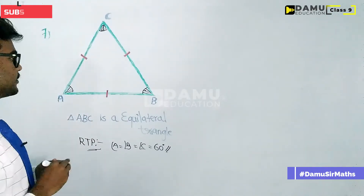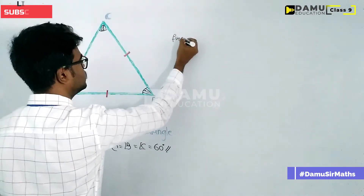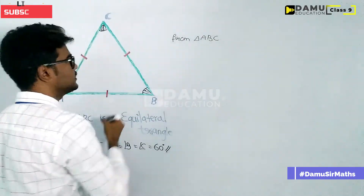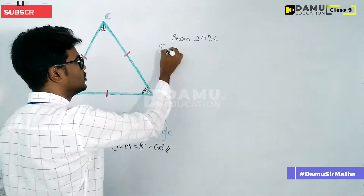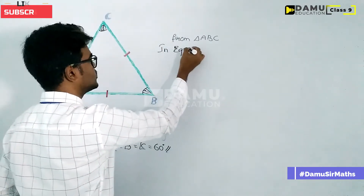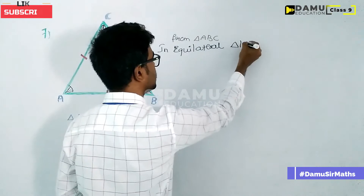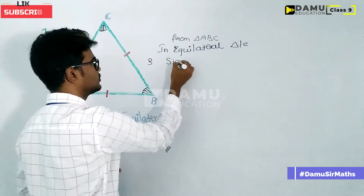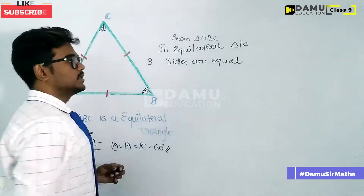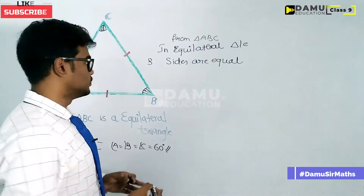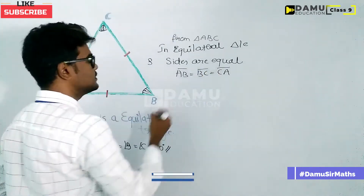From triangle ABC, what is given? In an equilateral triangle, all the sides are equal — three sides are equal. So AB will be equal to BC will be equal to CA. This is the condition.